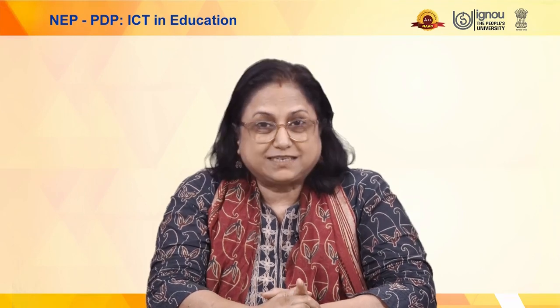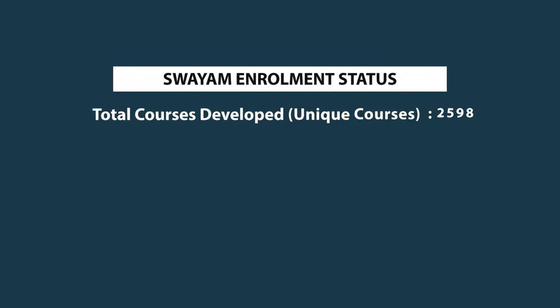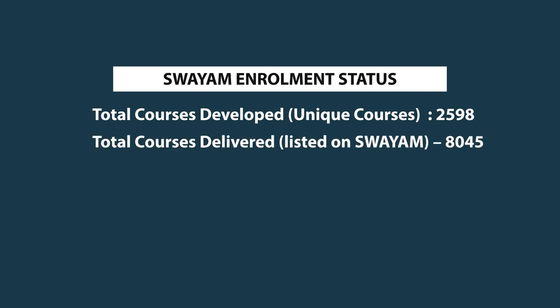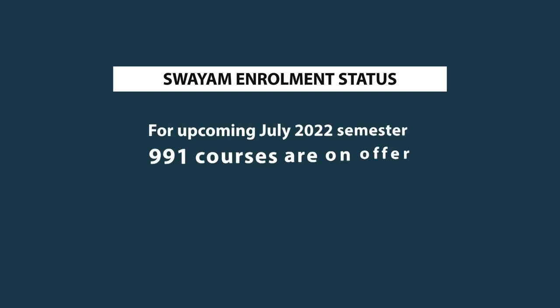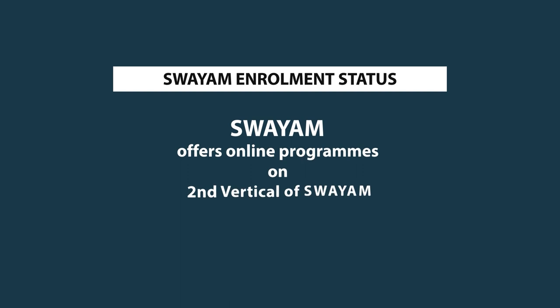As of date, the total unique courses developed on SWAYAM is around 2,598. Total courses listed on the SWAYAM platform is more than 8,000. Total enrollment since the beginning is 2.76 crores. Total universities approved for credit transfer is 159, and total certificates issued till date is 11.66 lakhs. In the July session, more than 900 courses are being offered. The SWAYAM platform is also being used for offering complete online programs, known as the second vertical of SWAYAM.